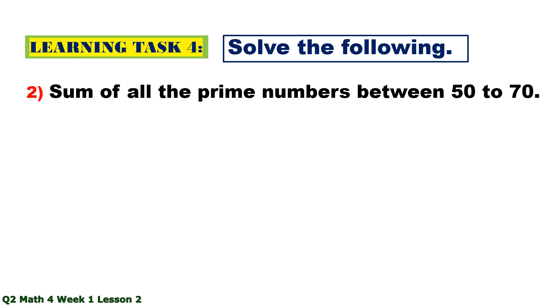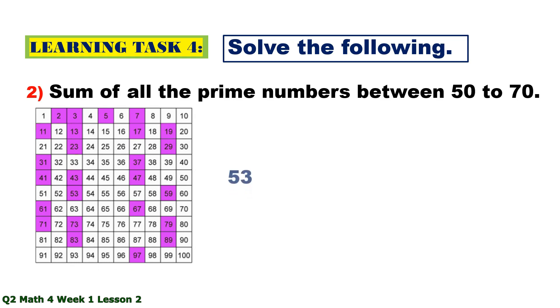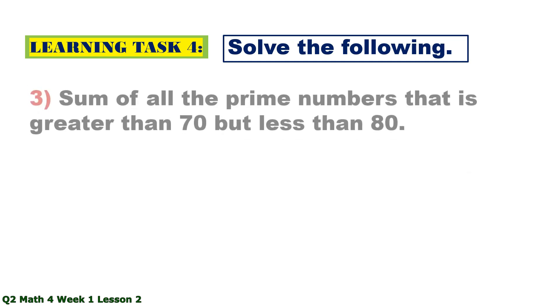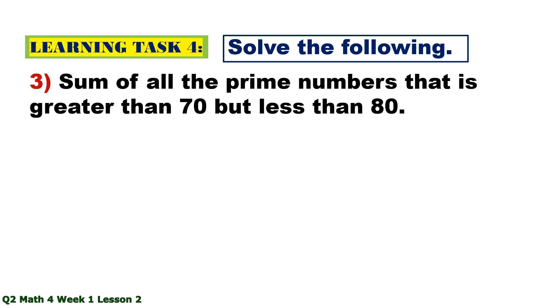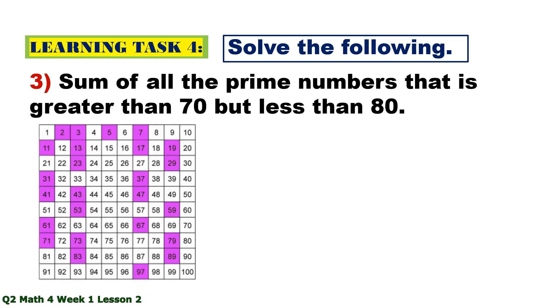Number 2. Sum of all the prime numbers between 50 to 70. Those are 53, 59, 61, and 67. Number 3. Sum of all the prime numbers that is greater than 70 but less than 80. So those are 71, 73, and 79. And the total is 223.